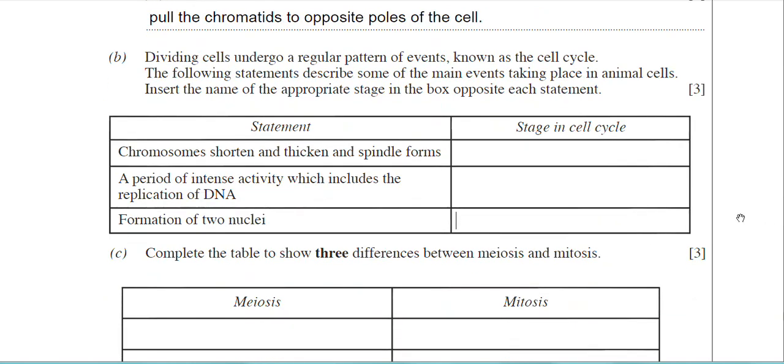Finally then, the formation of two nuclei. That occurs in the last stage of mitosis, which is telophase. Remember, telophase results in the formation of two cells. The cell actually divides into two by a process known as cytokinesis, but the stage is actually telophase. I've written the answers in for that question, and that was another three marks.